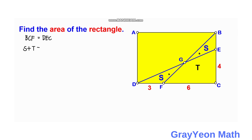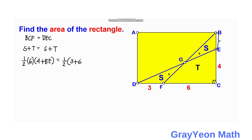So S plus P equals the area of triangle DEC. For triangle BCF, we have one half times the base, which is 6, times the height, which is 4 plus BE. This equals triangle DEC, which is one half times the base, which is 3 plus 6, times the height, which is 4.